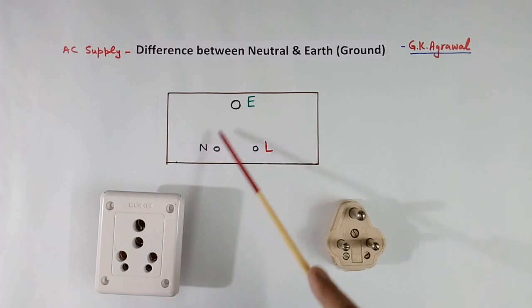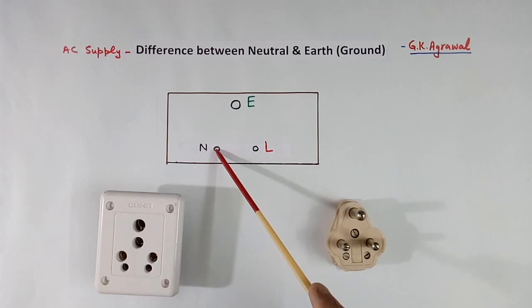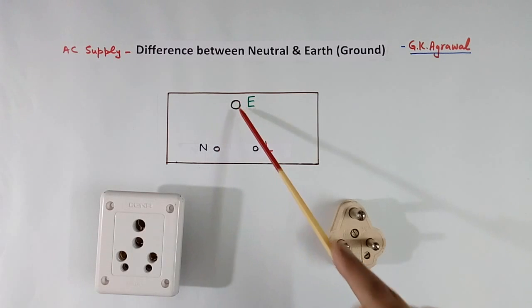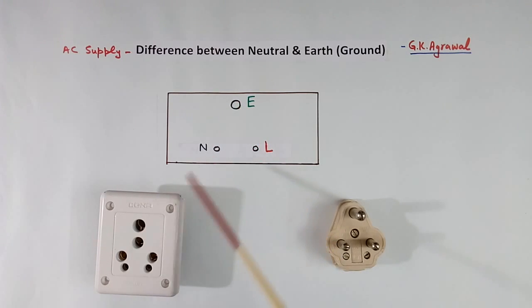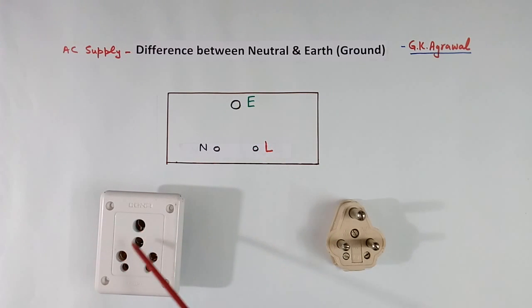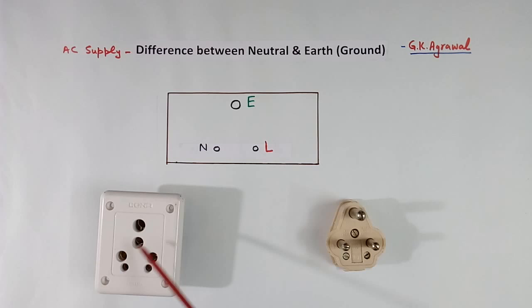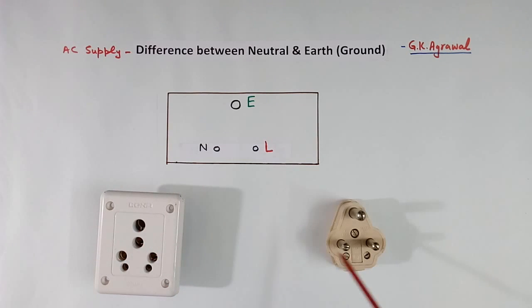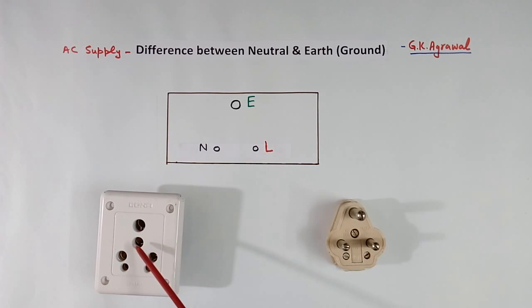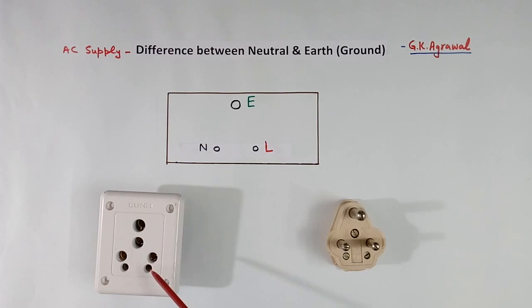So earth and neutral have separate connections. Here you are seeing 6 terminals — the outer 3 are for a 15 ampere plug, and the remaining 3 are for a 5 ampere plug.